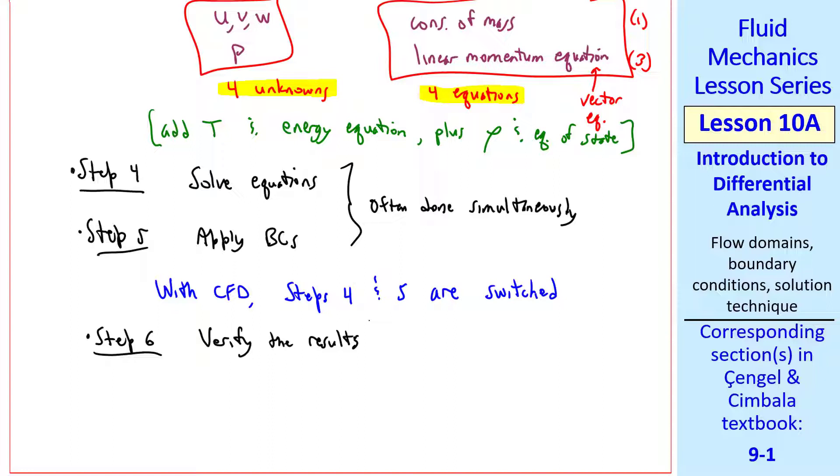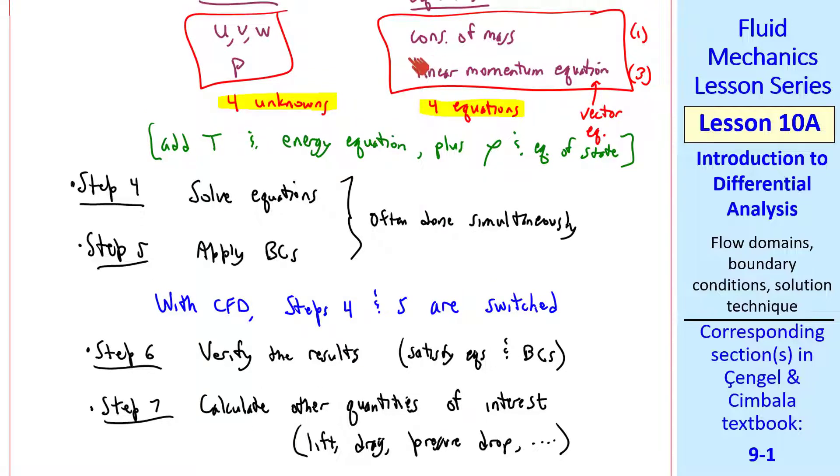Step 6 is to verify the results, specifically that these results satisfy the equations and the boundary conditions. And step 7 is to calculate other quantities of interest, such as lift, drag, pressure drop through a pipe, etc. In the next lesson, we'll look at the differential equation for conservation of mass.